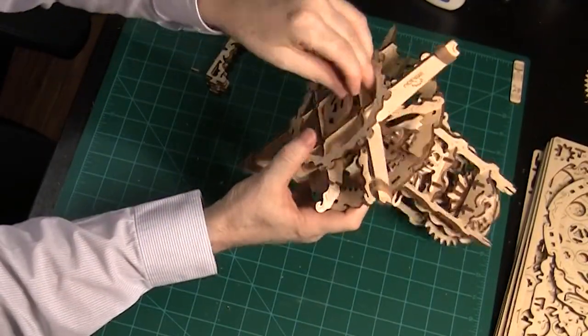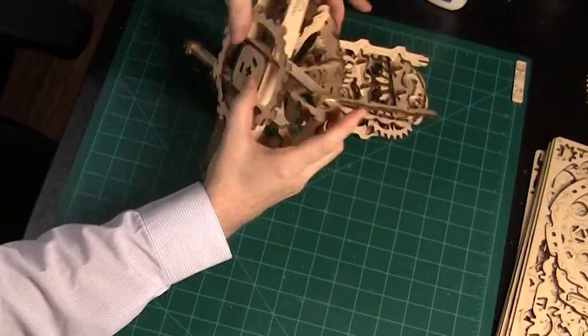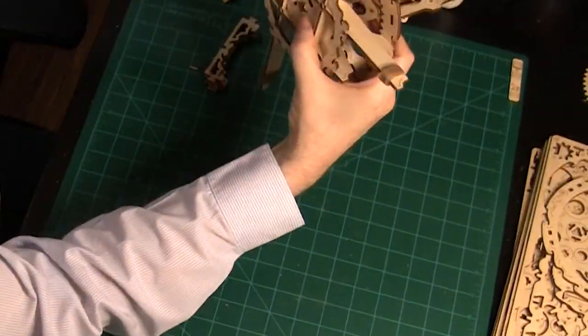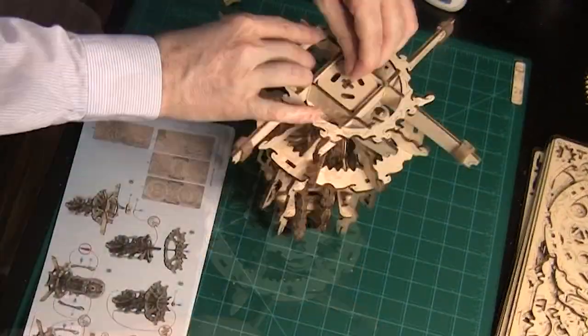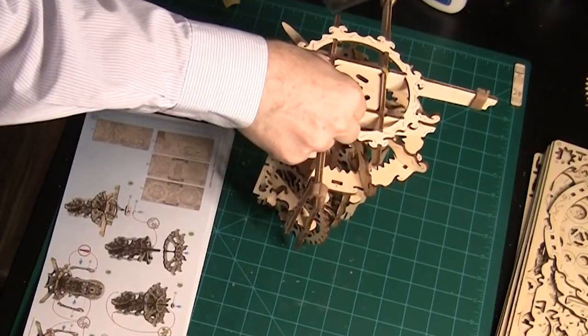Once the posts are in, add the rounded rectangular piece. Next, insert a small wedge piece into the base.